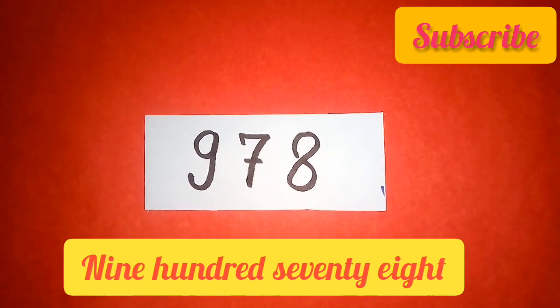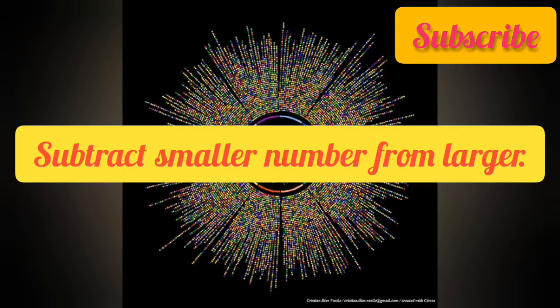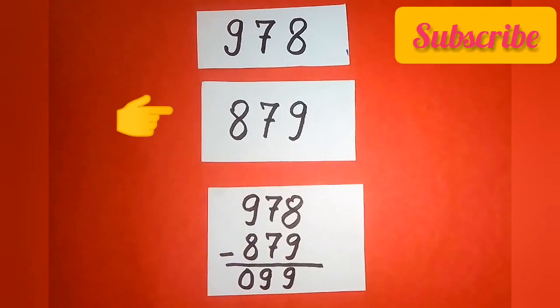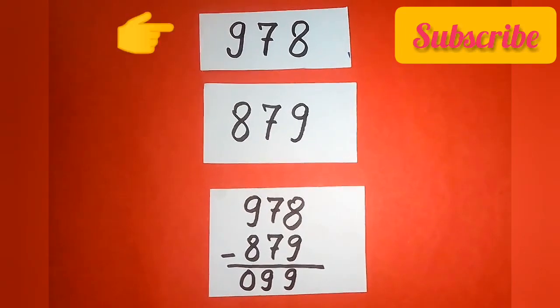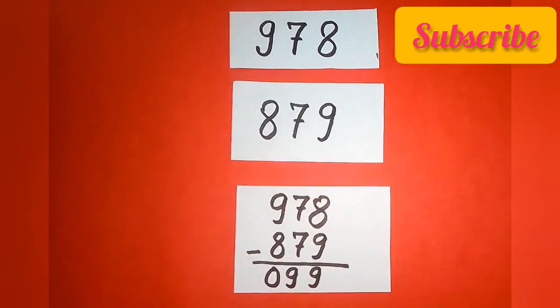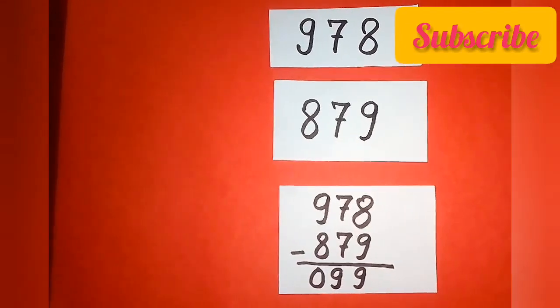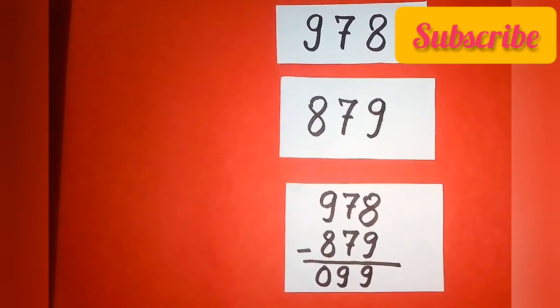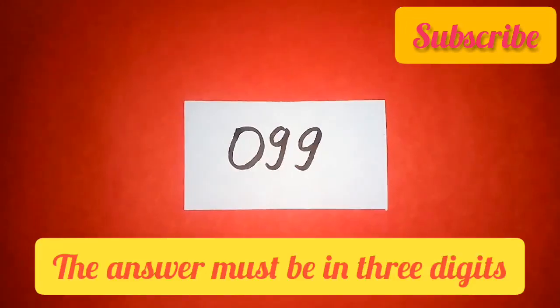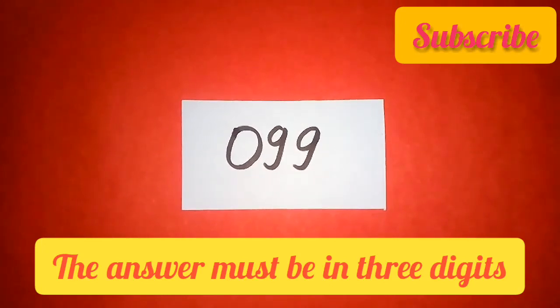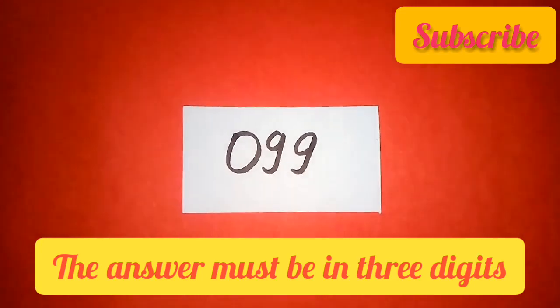Next will be, subtract smaller number from larger. So let us see what will happen. My number was 879, its reverse is 978 and the difference is 0 9 9. So the answer must be in three digits, only then the magic will be applicable.